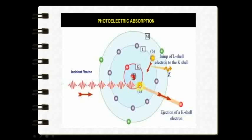Moving on to photoelectric absorption: the incident photon tries to interact with the innermost binding electron. What happens is that this electron gets ejected — this recoiled electron is called a photoelectron. A void has been created within the innermost shell, so the electron from the next outermost shell, the L shell, jumps in and occupies this void. Once this electron occupies the void, it emits radiation called characteristic radiation.